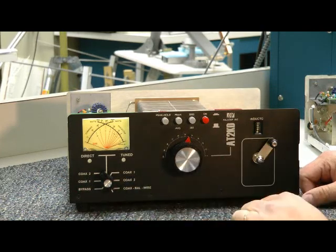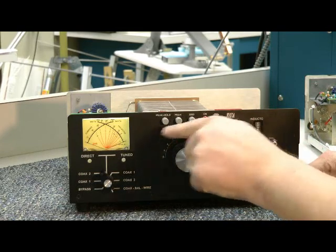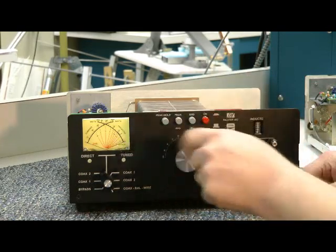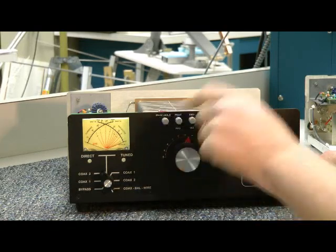And of course, this does balanced line. Here's your meter switching, either 300 watts full scale or 3,000 watts full scale. It has an average and peak reading here, and a peak hold button.